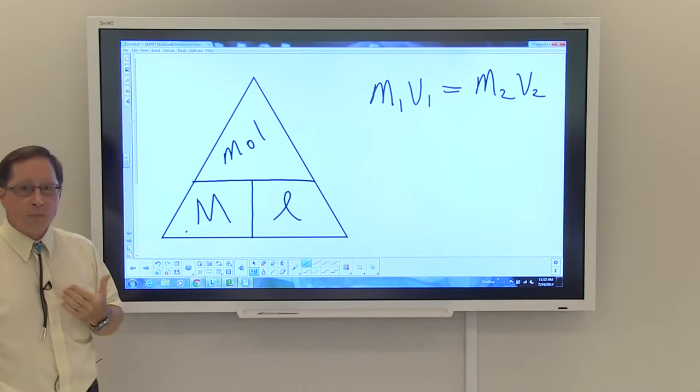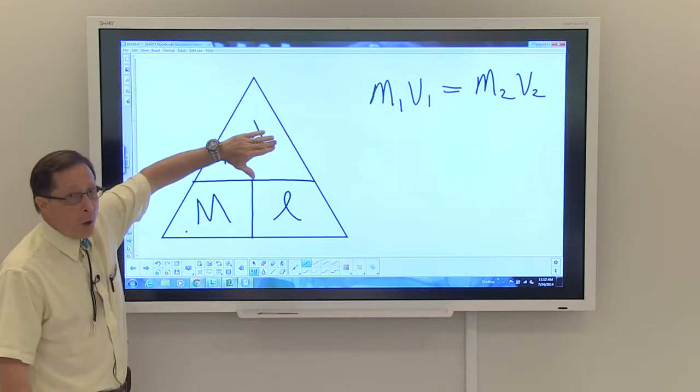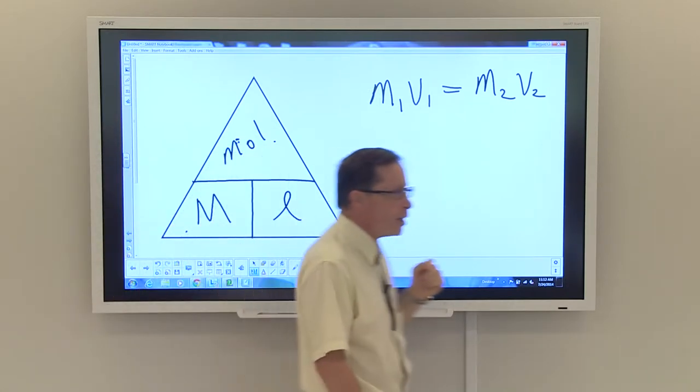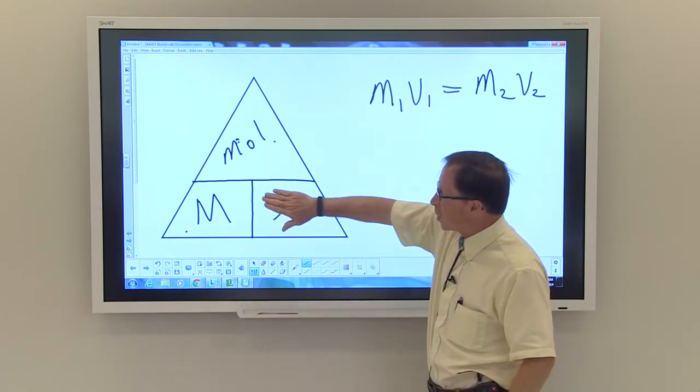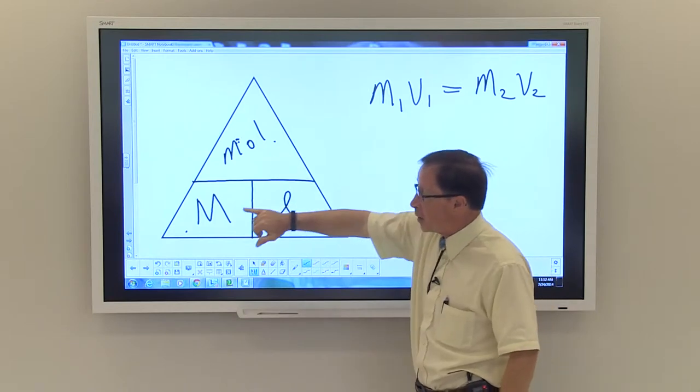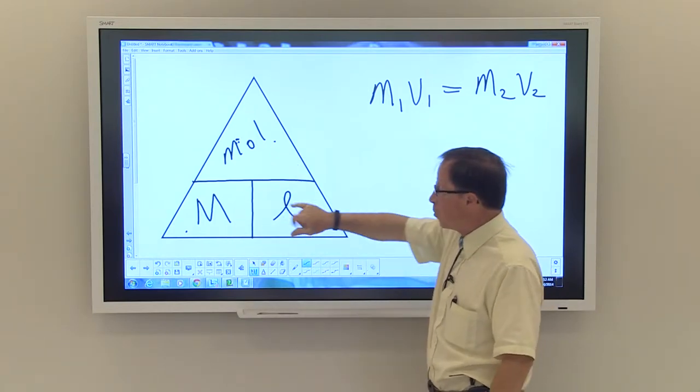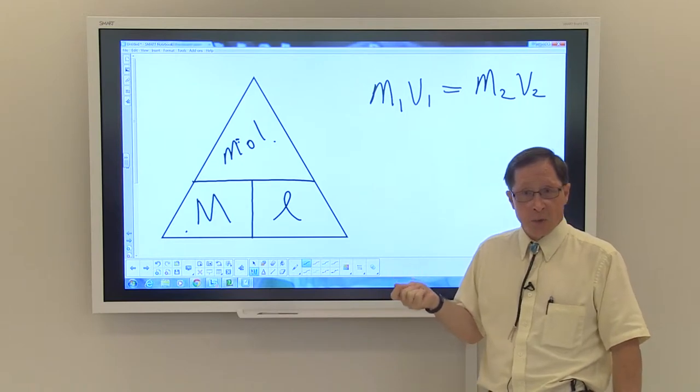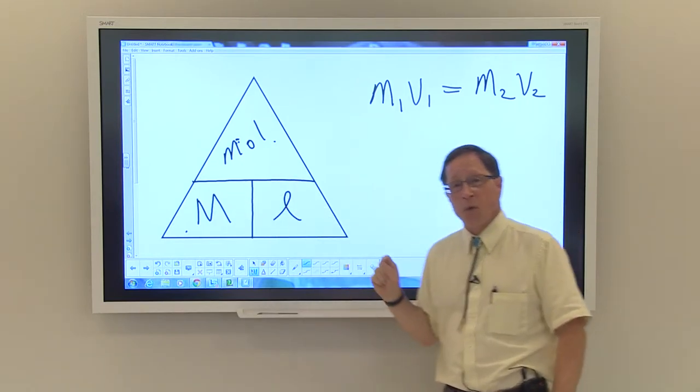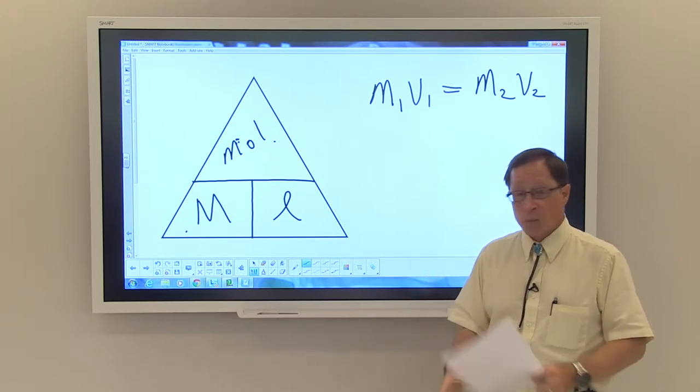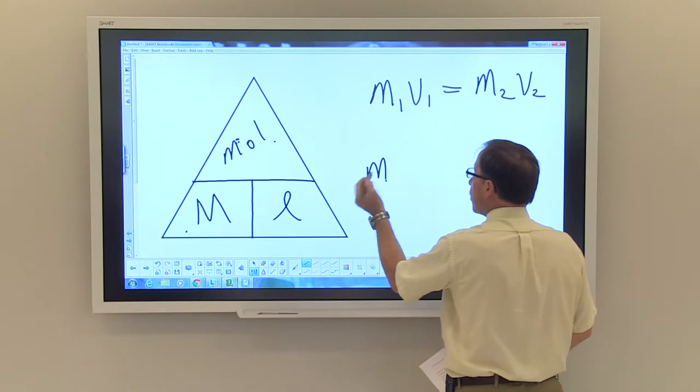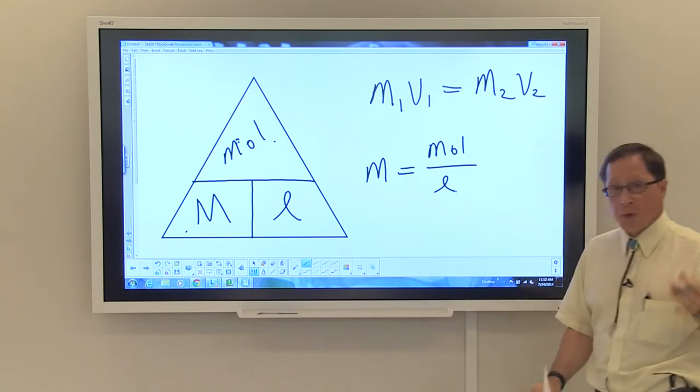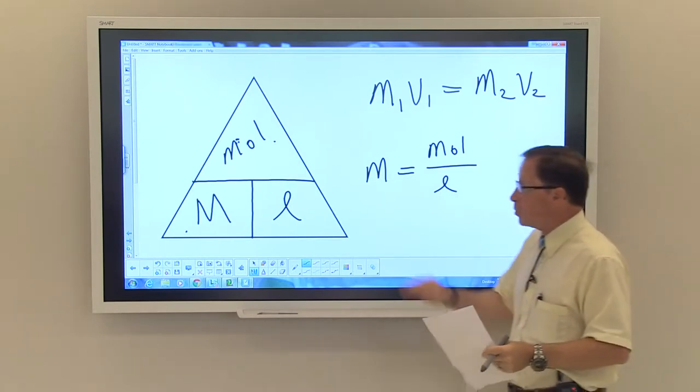If you wanted to calculate the number of moles that are in a solution, if you cover up moles, essentially what it's telling you to do is to multiply molarity times liters. And if we were interested in the volume, you would cover up volume, and you would determine that moles divided by molarity would give you your volume. Three mathematical manipulations you can do using this. For people who are good with mathematics, good with algebra, all you need is that molarity is equal to moles over liters, and you can manipulate that to solve for whatever you need.